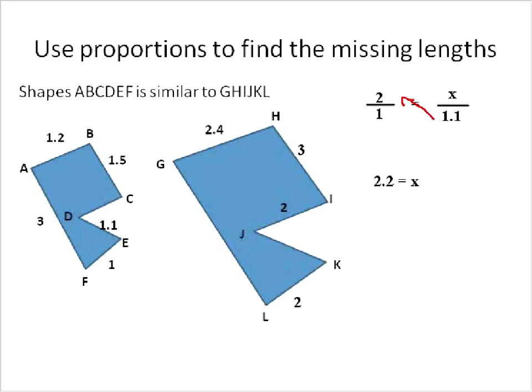So 2.2 is equal to x. We can fill that in right here on this shape, 2.2. You see how we did that? 2.2 divided by 1, anything over 1 is just itself. So basically, we can take what we've seen here, any of these numbers here, and just multiply them times 2 to get this length.